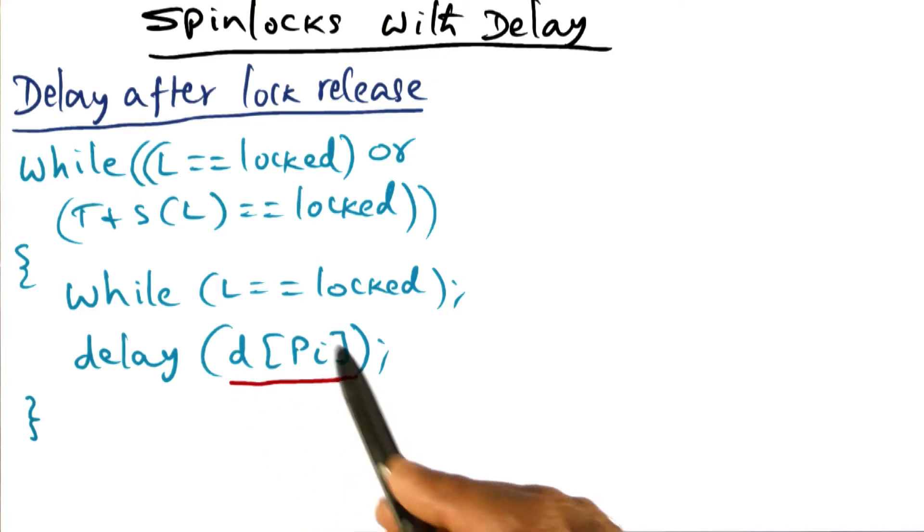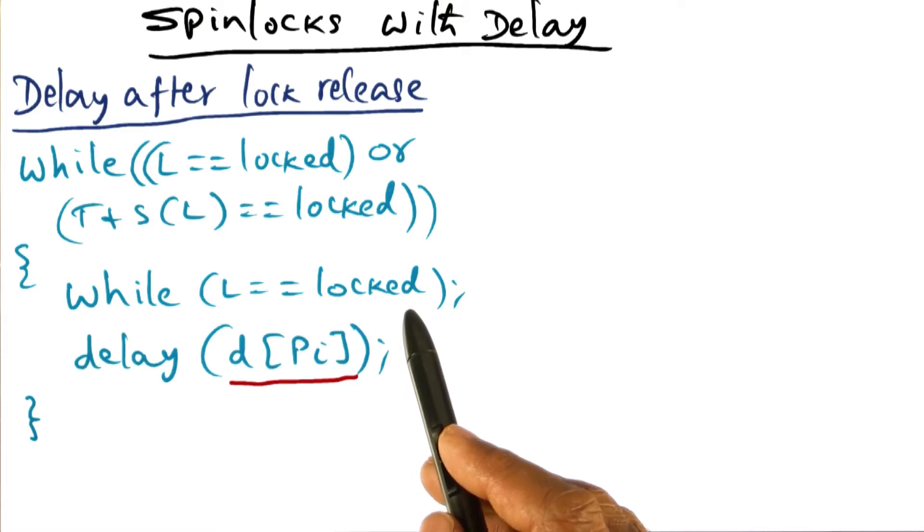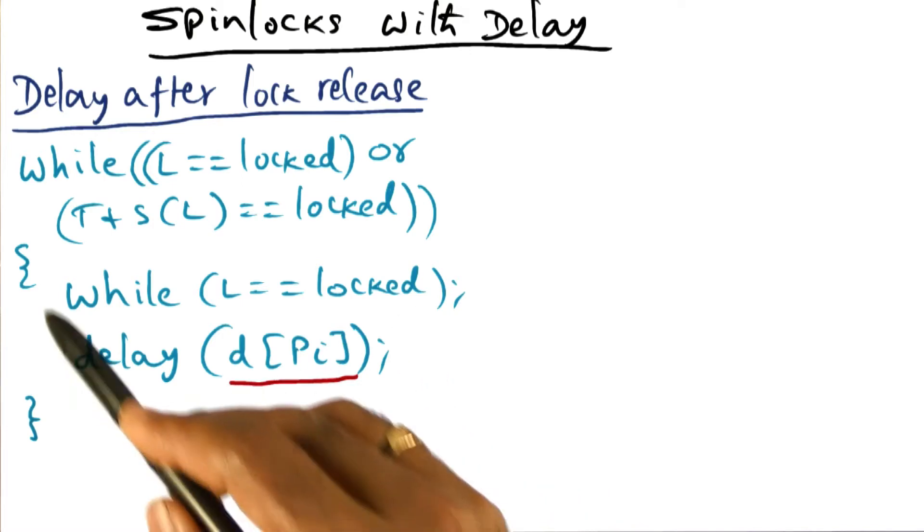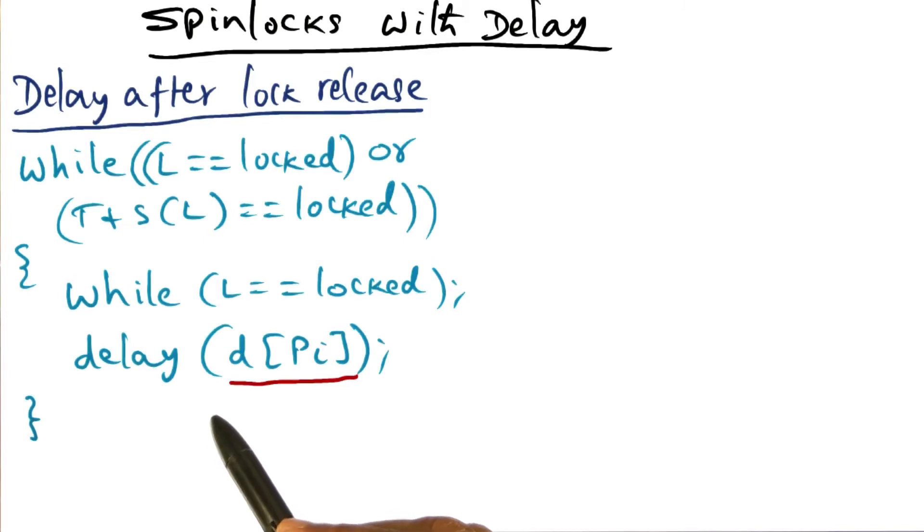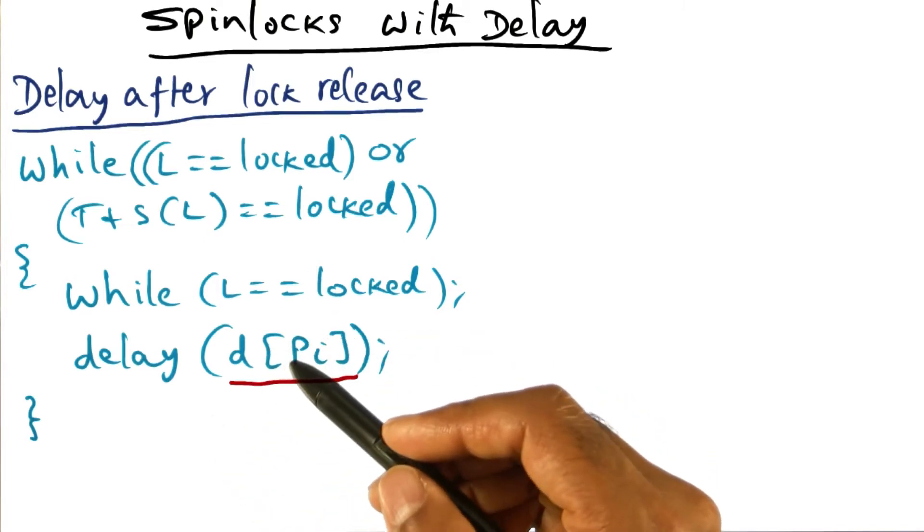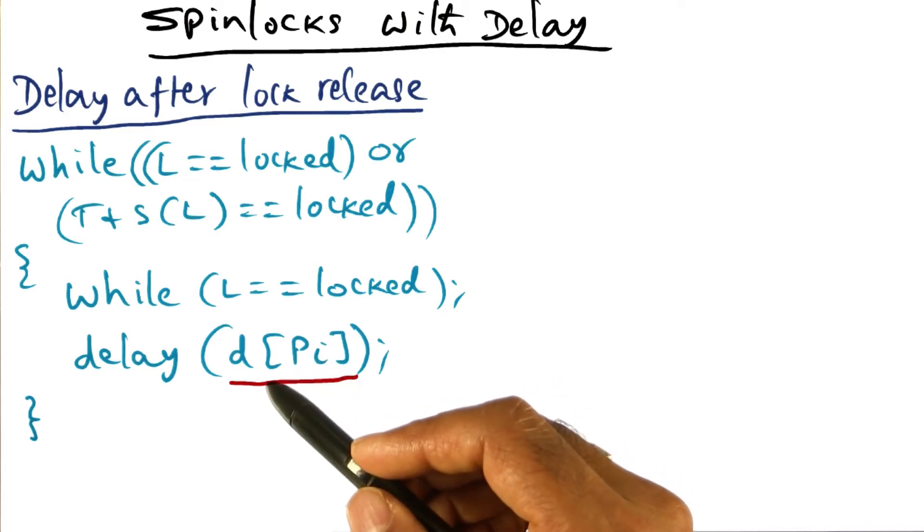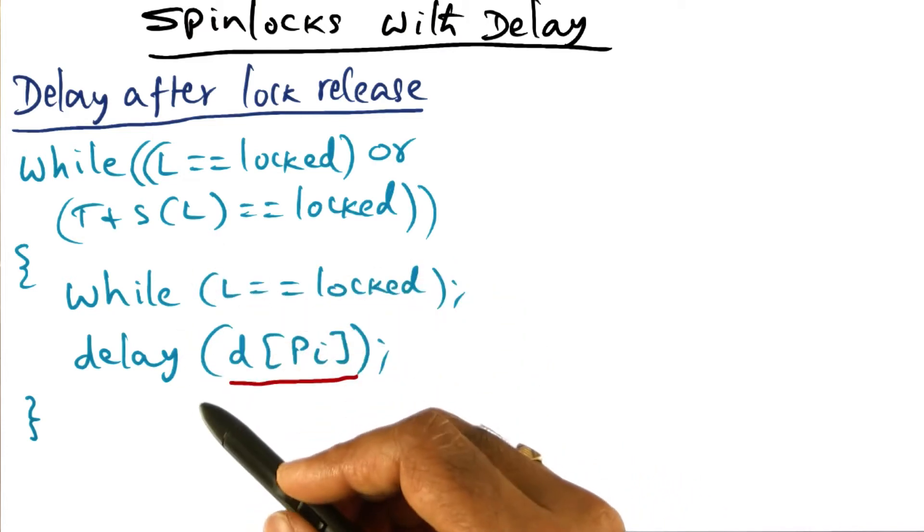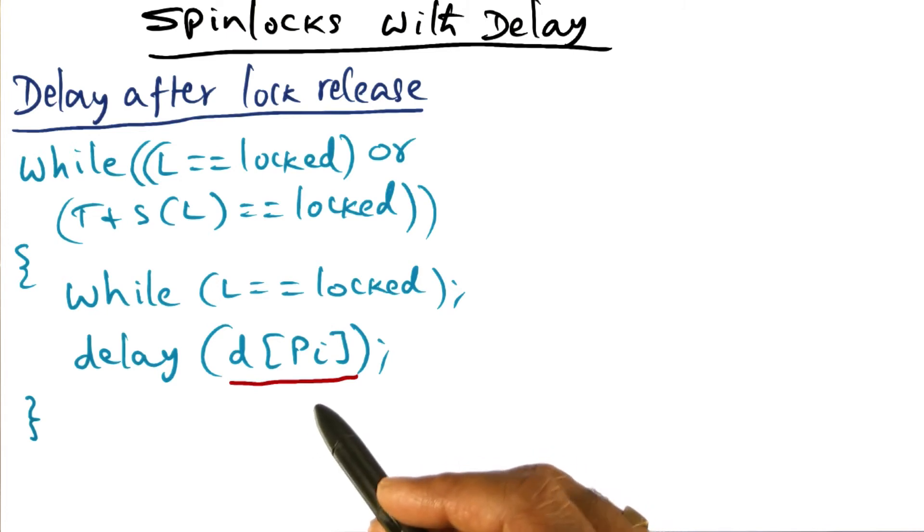So since the delay is being chosen differently for each processor, even though all of them notice that the lock has been released simultaneously, only one of them will go and check it. And so we are sort of sequentializing the order in which the processors that are waiting for the lock are going to check whether the lock is available. So that is one possible scheme for delaying.